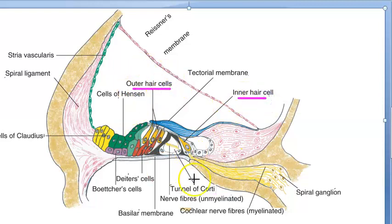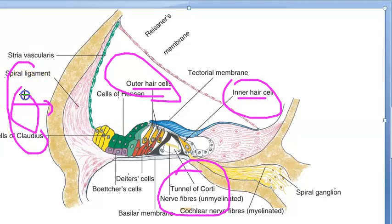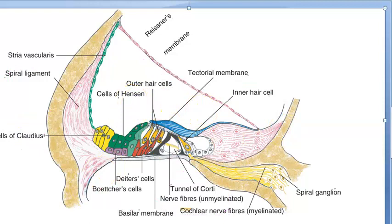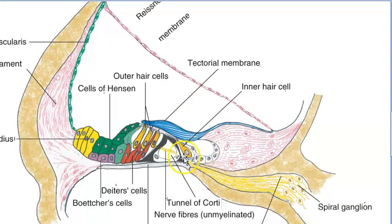The second component is the hair cells — outer hair cells and inner hair cells. If this is the ear, coming from outside to inside, you have outer hair cells then inner hair cells. The outer hair cells are arranged in three to four rows, as you can see here. The inner hair cells form only a single row.